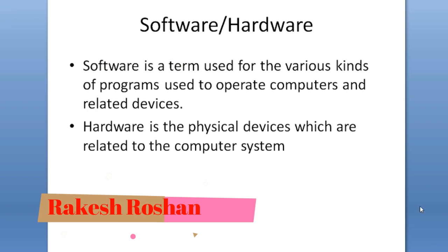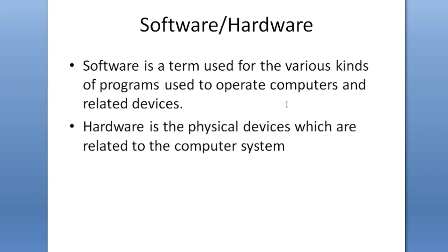So let us start with the definition of software. Software is the term which is used for the various kinds of programs which are capable of operating computers and related devices. Software is a package of programs — a collection of programs which can be used to operate computers and related devices. There are many types of software: small software for small work and heavy software for large works.